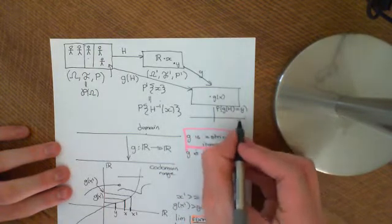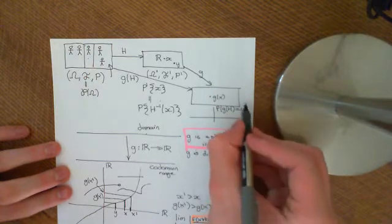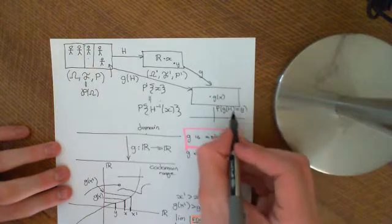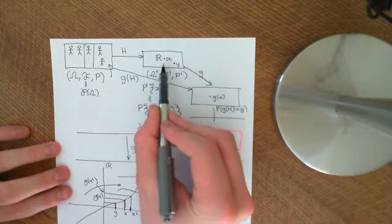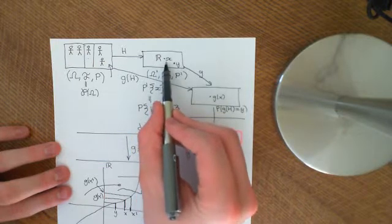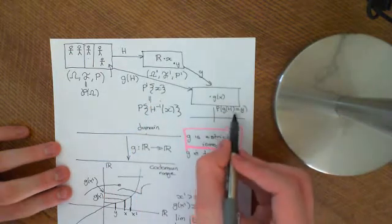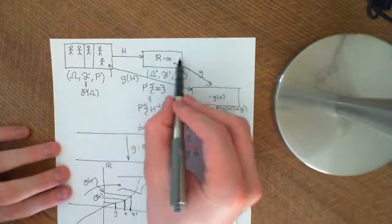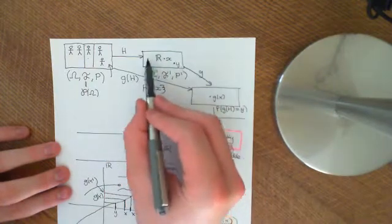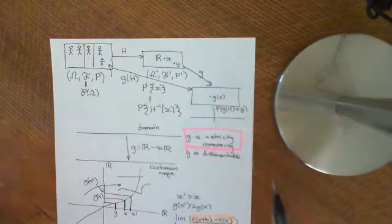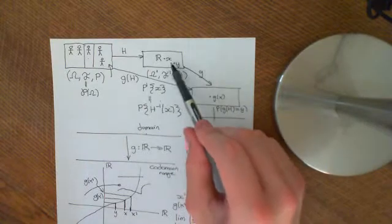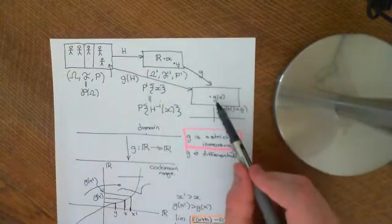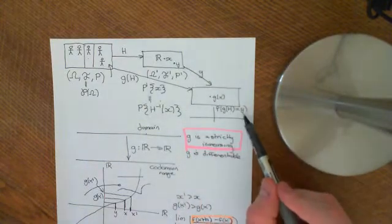We're going to make that equal to the probability mass function that it was equal to the value in this probability space which was mapped onto here. What we discussed in the previous video was that there was only one real number in here which was going to be mapped onto this specific real number y.